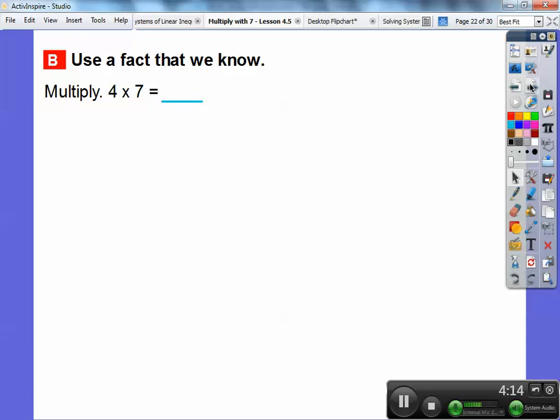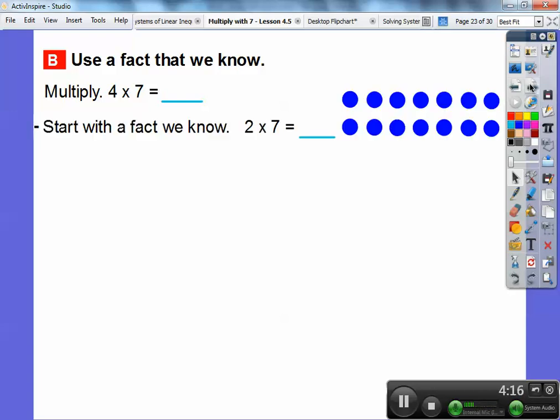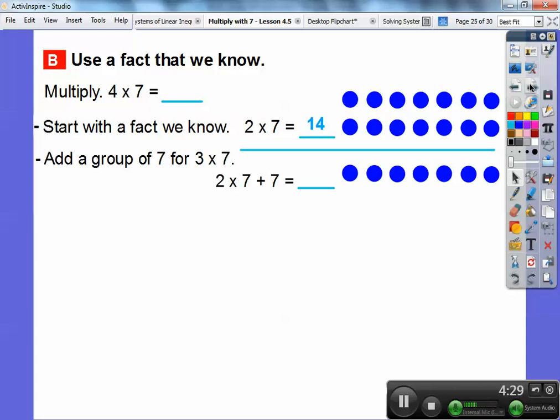We can also use facts that we know. For example, we can start with some smaller numbers, you guys, and start with facts that we know. Well, I know we know that two times seven equals fourteen right there. So, we can do three times seven by adding another group of seven. Three times seven is the same as this two times seven, which is fourteen plus seven more. Fourteen plus seven more is going to get us twenty-one.